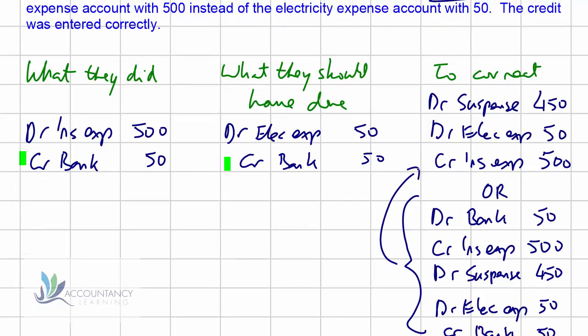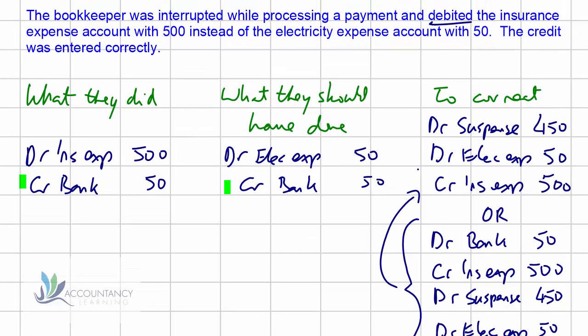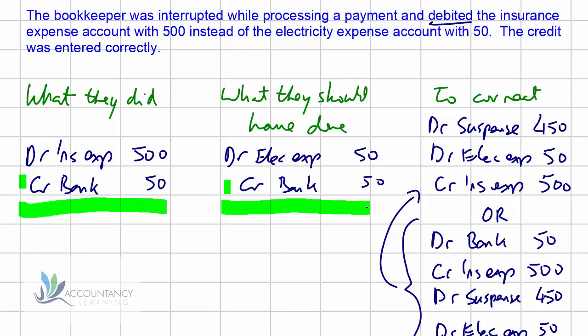We've gone through three different examples now, and hopefully you can see the technique. Read the information very carefully — record what they actually did, including the errors, and note that if it doesn't balance then there's going to be a suspense account involved. Then understand what they should have done if they made no mistake at all, and compare the two to work out what you need to do to correct their entries.